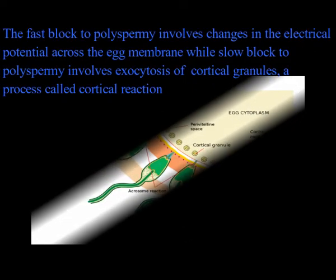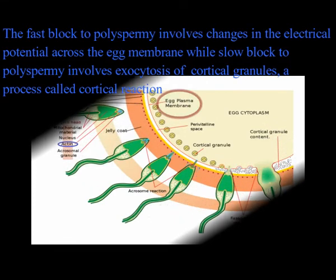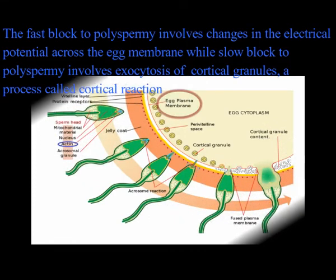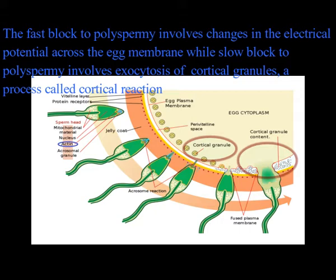The first block to polyspermia involves changes in the electrical potential across the egg membrane, while the slow block to polyspermia involves exocytosis of cortical granules in a process called the cortical granule reaction.